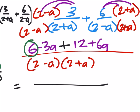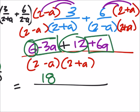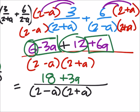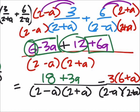Combining like terms, we got a 6 and a 12, which would be 18, and a negative 3a plus 6a would be plus 3a. It looks like we can factor out a 3 from the numerator, so that gives us 3 and a 6 plus a, and it's over the same denominator.